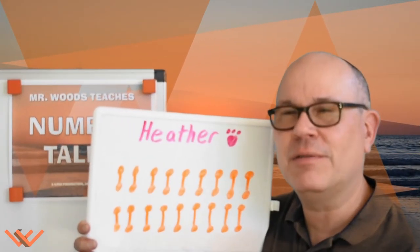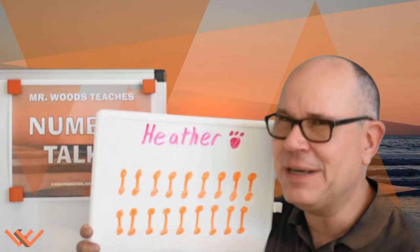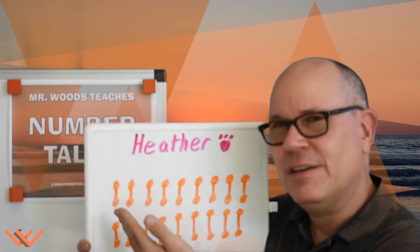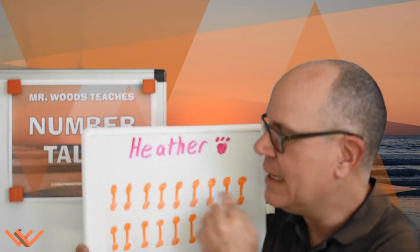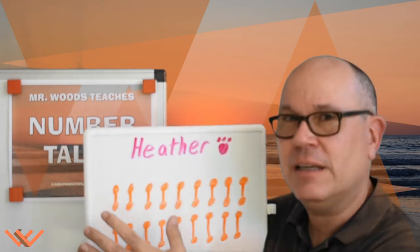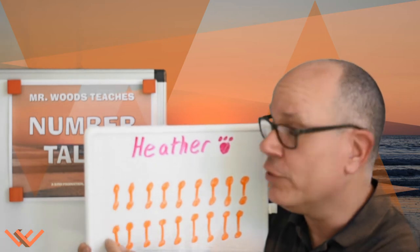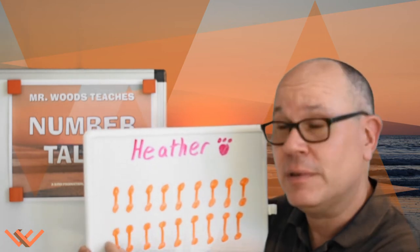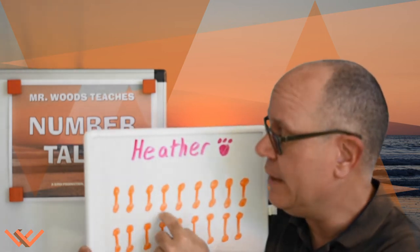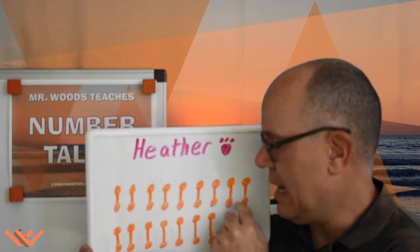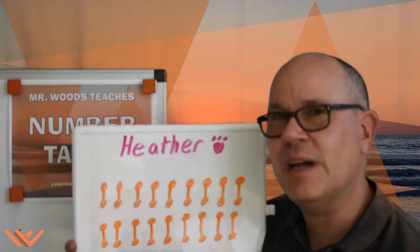Okay, mathematicians. See what I did here? I have 18 dog treats. There are two groups of 1, 2, 3, 4, 5, 6, 7, 8, 9. Two groups of 9, so 9 plus 9 is 18.